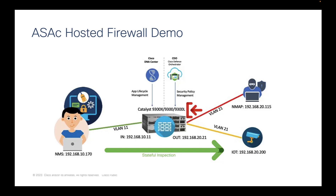Now let me show you a quick demo for ASAc on Catalyst 9300. Here is the scenario: we have an inside network with VLAN 11 and an outside network with VLAN 21. We use the 192.168.10.0 network for inside and 192.168.20.0 network for outside. In this demo, I would like to show a hacker trying to do port scanning from outside to inside the network.